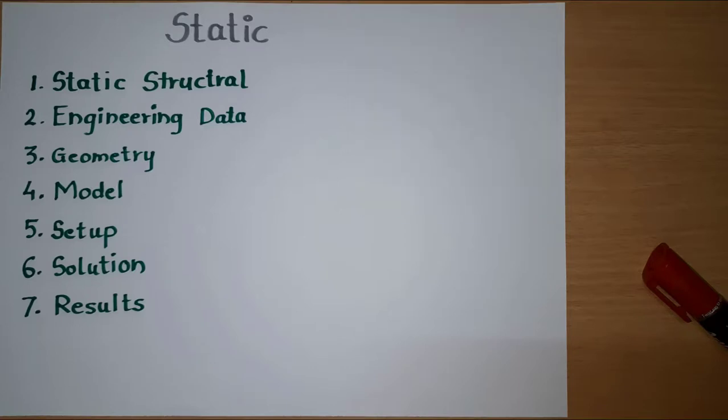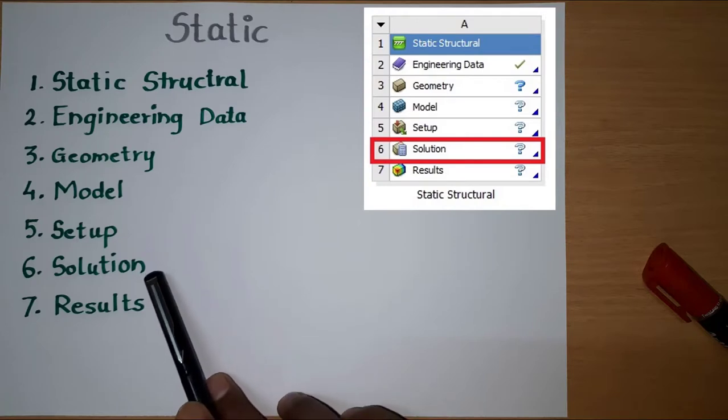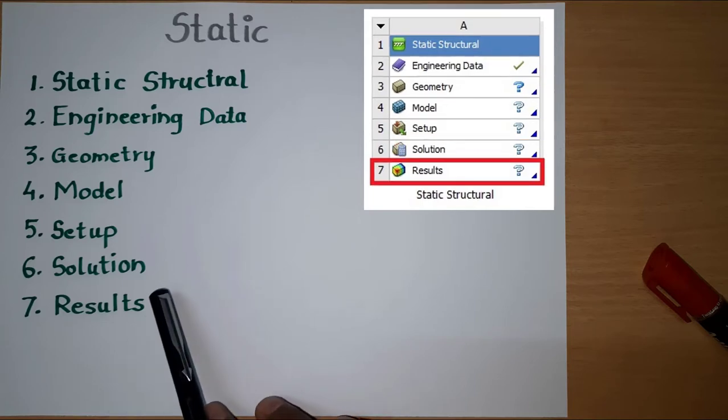Once we done with this pre-processing we can start solving analysis. Solving model comes under processing. Where software prepares stiffness matrix and solves number of equations. Once we have result available, we can start last step, that is, results or post-processing.